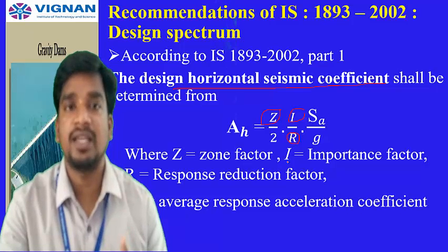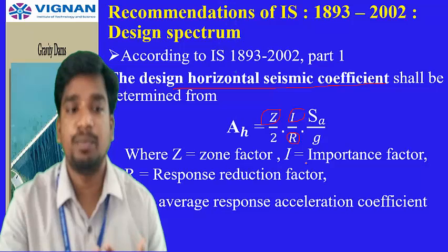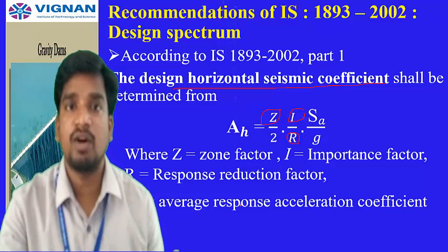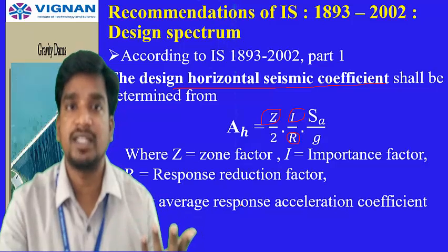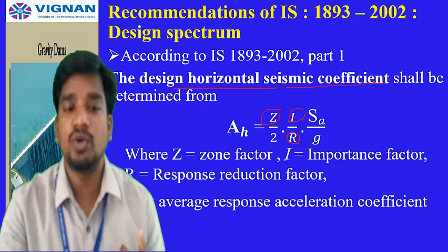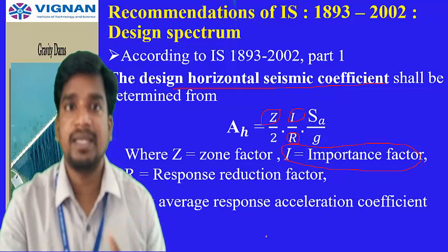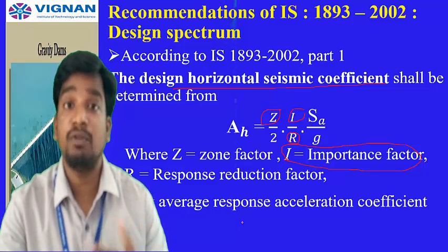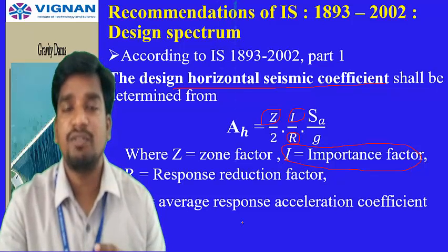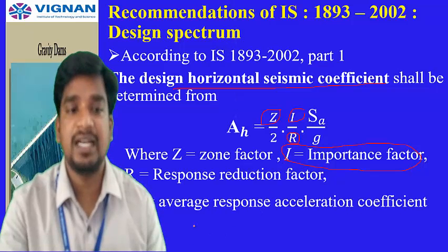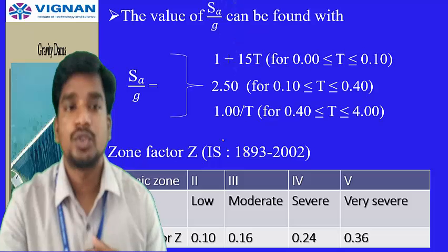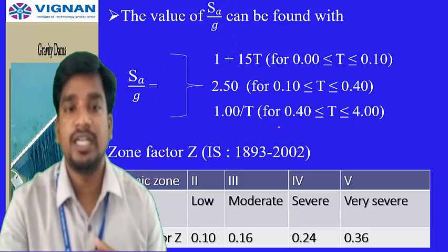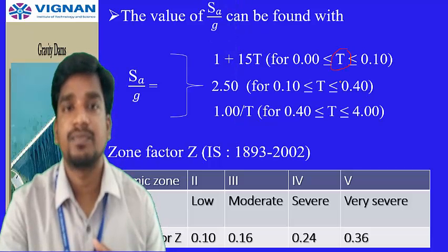In the revised IS 1893:2002, Z is the zone factor given in a tabular column by the code itself. Similar to the F₀ values seen earlier, the zone factor Z increases with zone: Zone 2 = 0.10 and Zone 5 = 0.36. The importance factor I is also given by the code depending on the height of the structure. Sa/g is calculated based on the natural period of vibration T, which in turn depends on the type of foundation and material at the construction site.